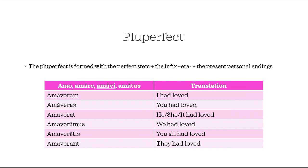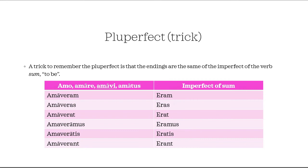The mechanism of formation of the pluperfect is a little different. The starting point is always the perfect stem. We need to attach to the perfect stem an infix 'era,' and then we use the personal endings of the present system. The forms are: amaveram, amaveras, amaverat, amaveramus, amaveratis, amaverant. The translation: I had loved, you had loved, he/she/it had loved, we had loved, you all had loved, they had loved. The stem amav never changes — we attach the infix era and then use the personal endings of the present system.